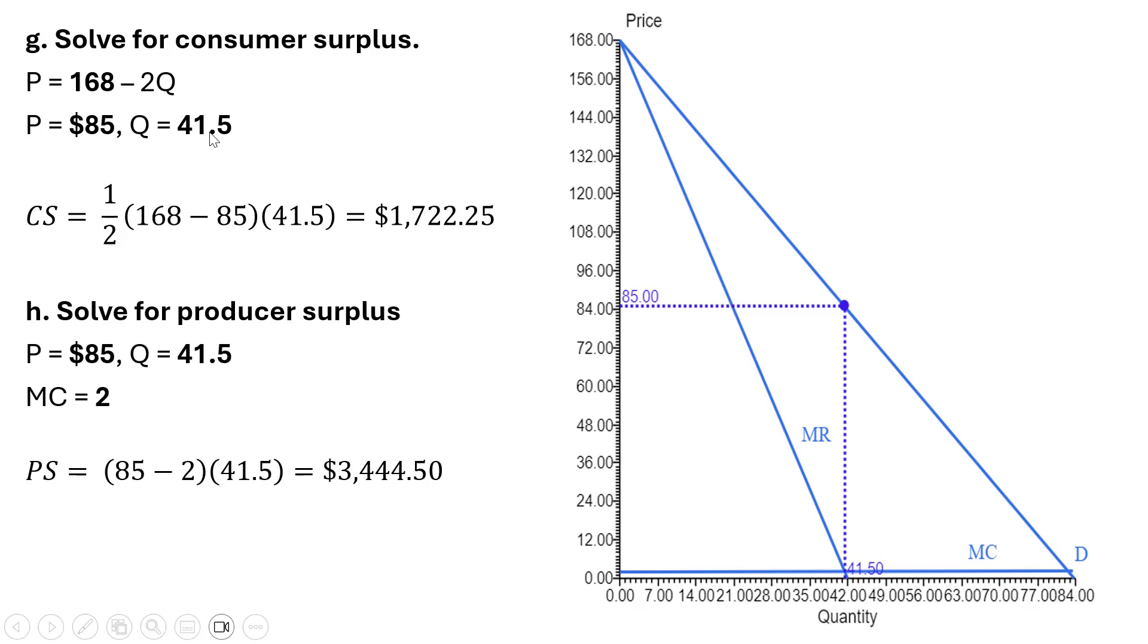Now we're going to solve for consumer surplus. The key bits of information we need is the inverse market demand, which has a slope of 168. Here's the monopolist demand curve, and there's the slope. We need the profit maximizing price and quantity. This triangle right here, the area of this triangle given by the height of the demand curve and the market price represents consumer surplus.